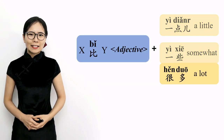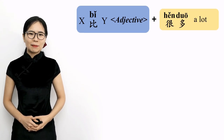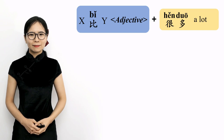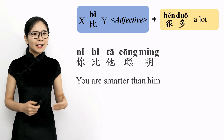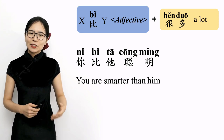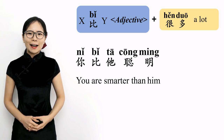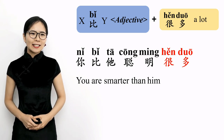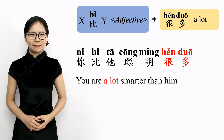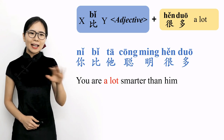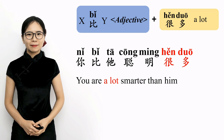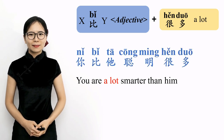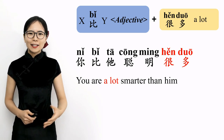The third qualifier is 很多, which means 'a lot.' Please repeat after me: 很多, 很多, 很多 — a lot. 你比他聪明 means 'you are smarter than him.' By adding the qualifier 很多 after the adjective 聪明, we can say 'you are a lot smarter than him.' Please repeat after me: 你比他聪明很多. 你比他聪明很多 — you are a lot smarter than him.